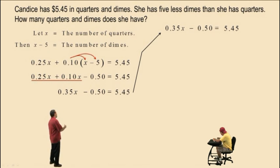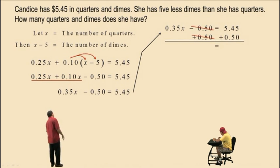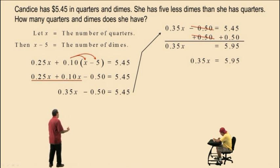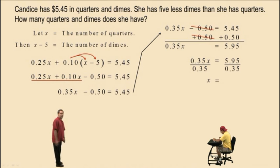We have to isolate the variable term, 0.35x. So we'll add 0.50 to both sides. Those cancel there. And on the left-hand side, we're left with 0.35x. And the right-hand side is 5.95. And now we have 0.35 times x. So we need to divide out that 0.35. So we divide both sides by 0.35. And we get x equals 5.95 divided by 0.35. Charlie, what did you get for that calculation? 17. 17, that's right.